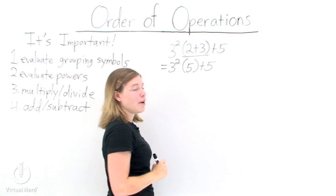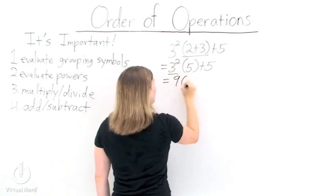Our second step is to evaluate any powers. So 3 squared becomes 9.